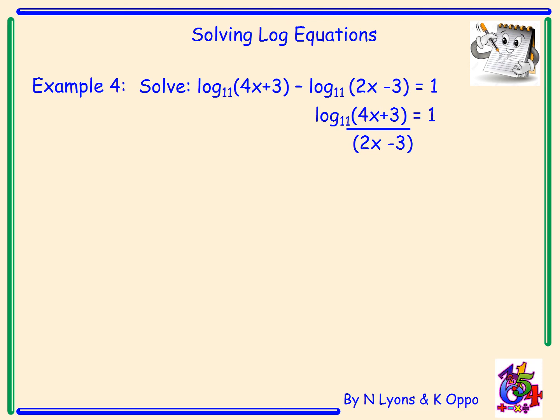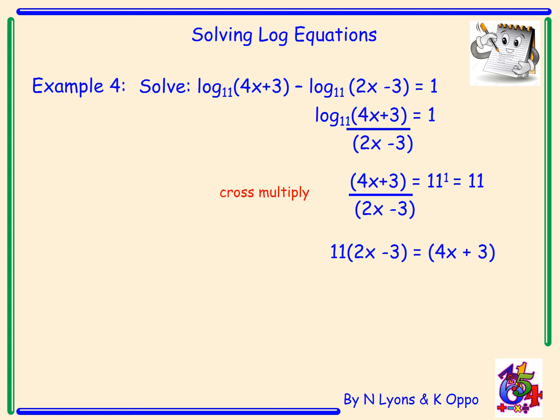Thinking about it: (4x + 3)/(2x − 3) must equal 11 to the power 1, which is just 11. To solve, cross-multiply: 11(2x − 3) = 4x + 3. Expanding: 22x − 33 = 4x + 3. Collecting x on the left and numbers on the right: 18x = 36, so x = 2.